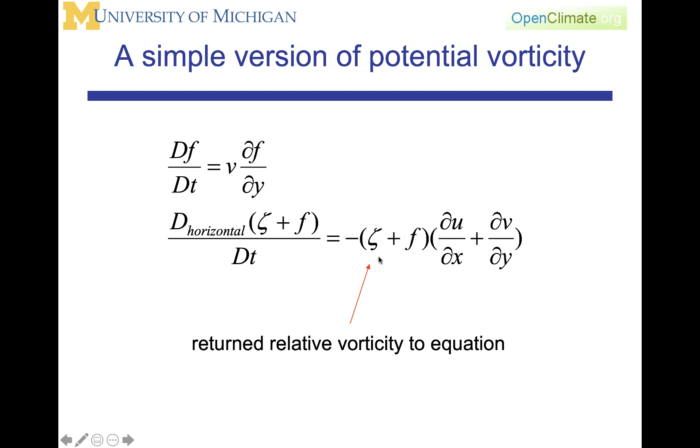We're going to return the zeta to the scaled equations. You might recall that f is generally an order of magnitude larger than zeta. Hence, we have argued in the scaled equations that you could ignore this term. But we're going to return it here as a small term, and one of the reasons to do that is so that we can match this variable on this side with this variable on this side.